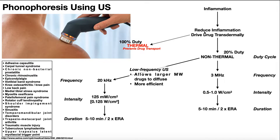For phonophoresis, we use ultrasound, and for ultrasound we have two options: we can either use thermal parameters or non-thermal parameters. For phonophoresis, we never use thermal parameters, which means we never use a continuous or 100% duty cycle. This actually impairs the drug transport across the skin and through the membranes, which will prevent that drug from actually getting to the target tissue. So never use a thermal cycle on phonophoresis — we always use the non-thermal cycle.